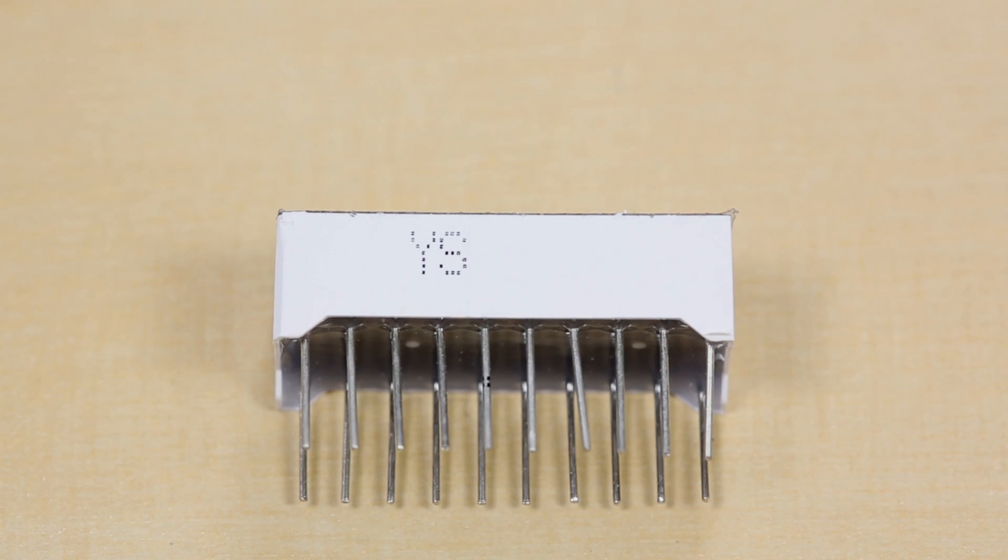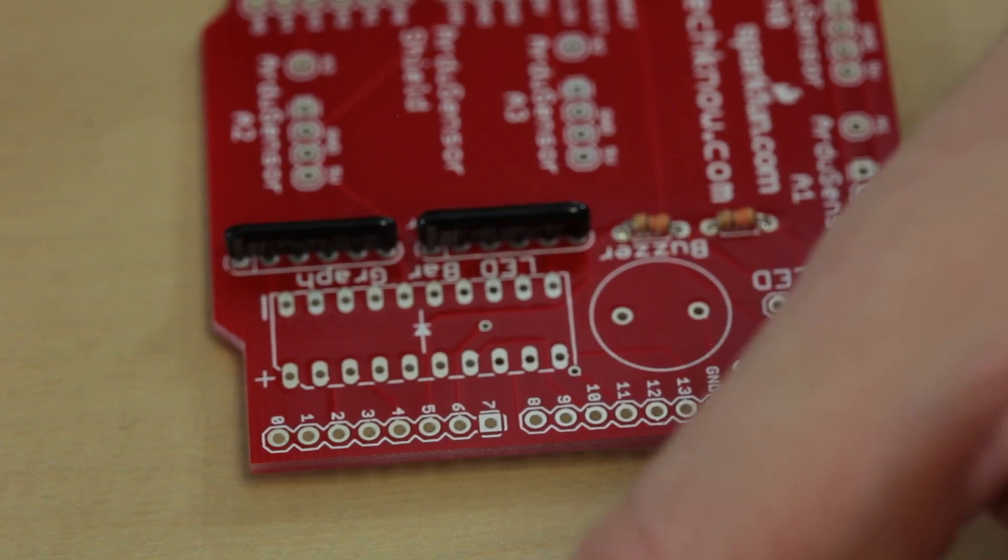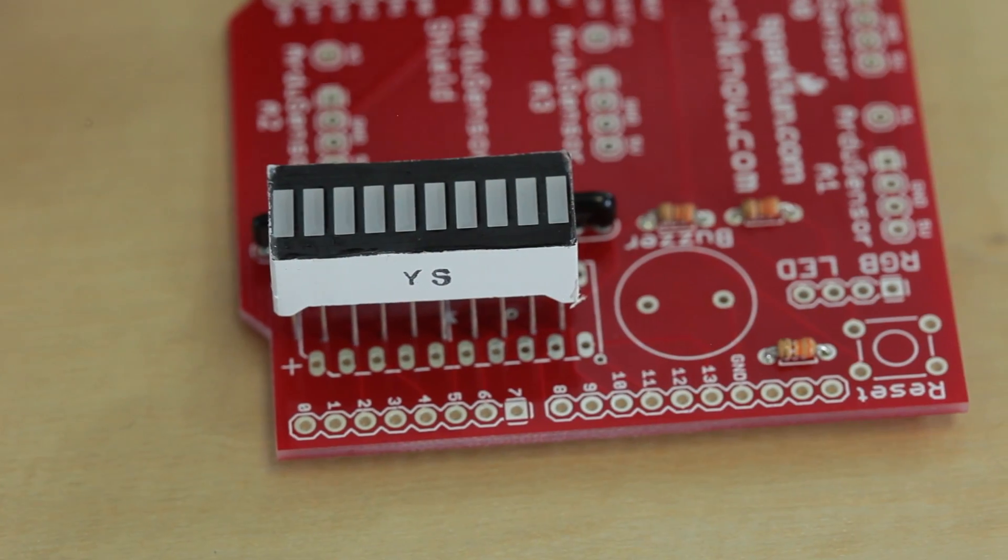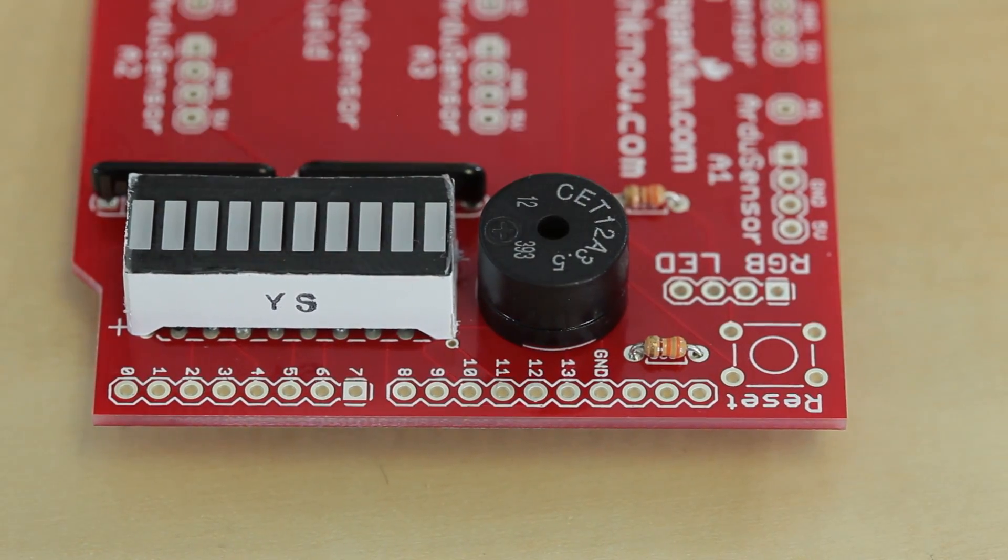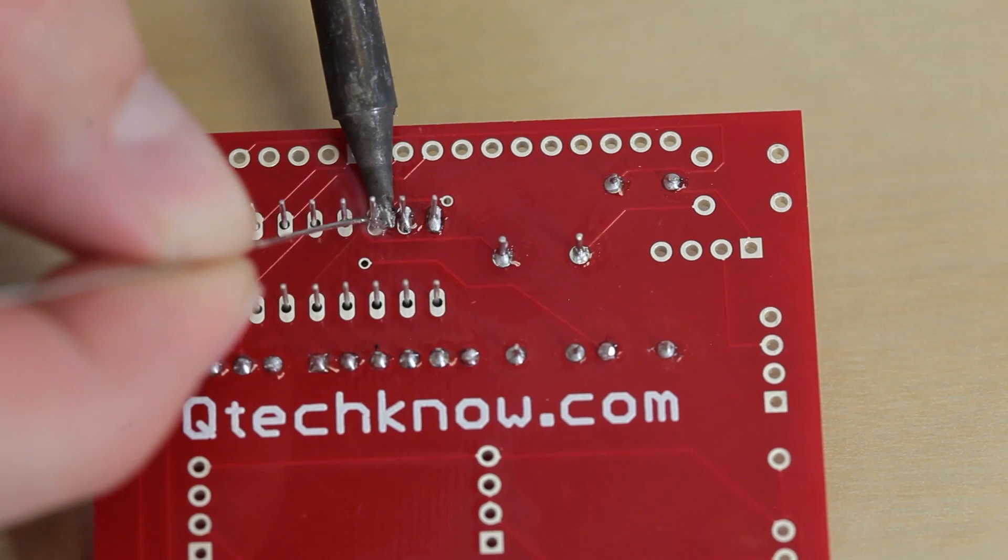For the LED bar graph, you can see that it's got a YS on one side and nothing on the other. The label will go on the outside of the board closest to the edge. Since both components are roughly the same height, it's easiest to place them both in and solder them at once.